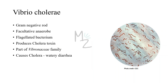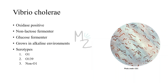It is responsible for causing cholera, which is a watery diarrhoea disease. It is oxidase positive, non-lactose fermenting, but it does ferment glucose. It grows and thrives in alkaline environments. Vibrio cholerae is divided into serogroups according to the nature of its O cell wall antigen, into O1, O139 and non-O1.